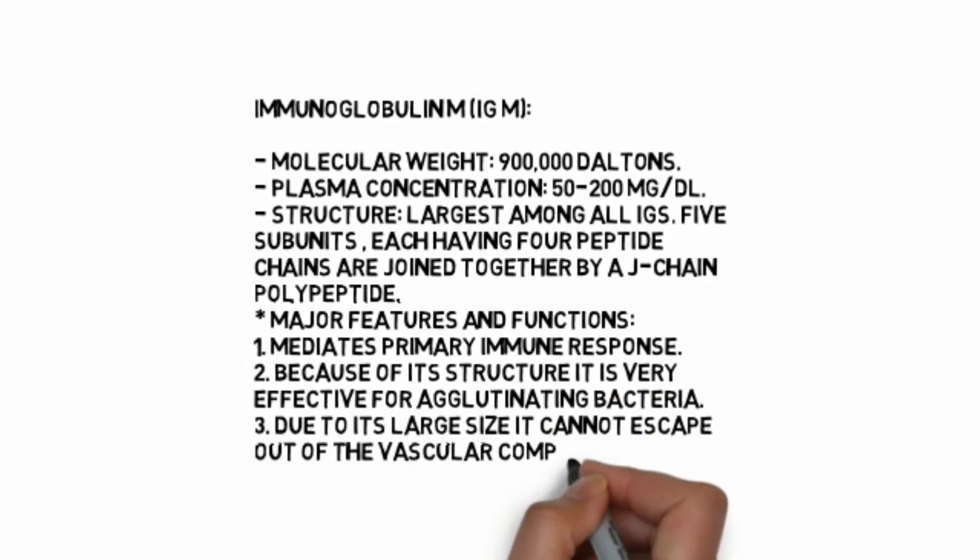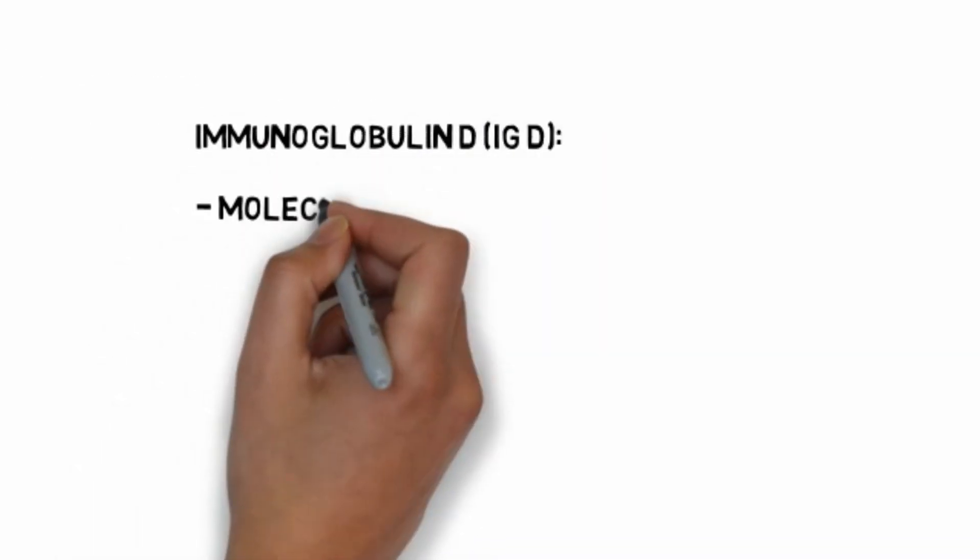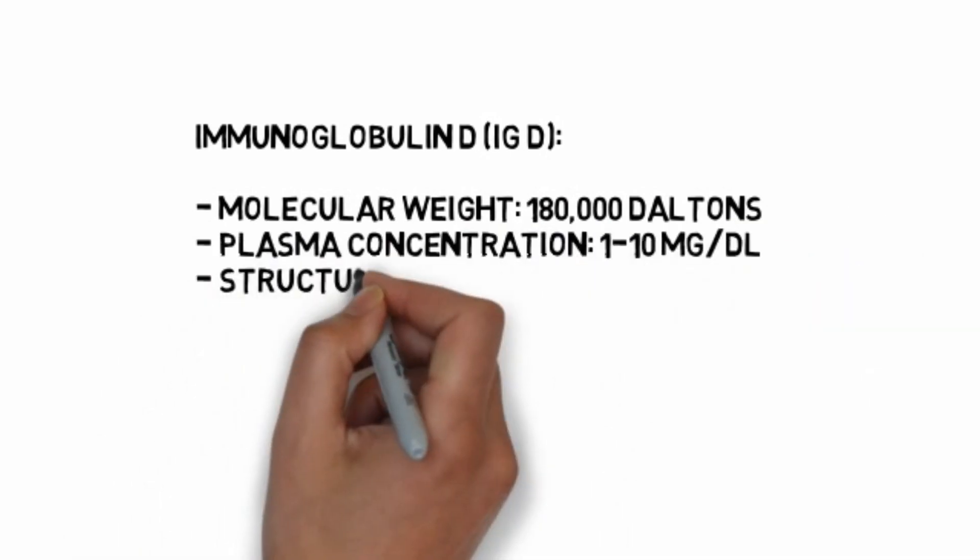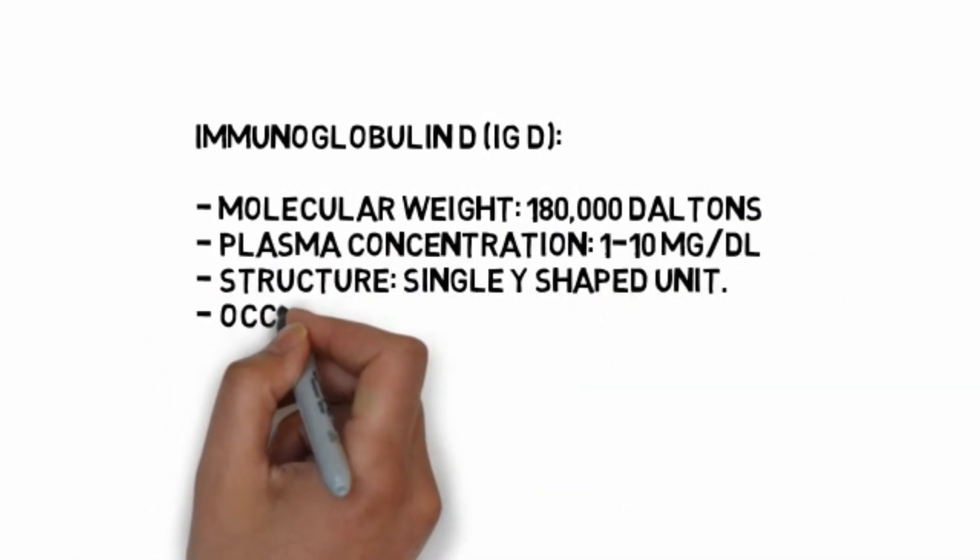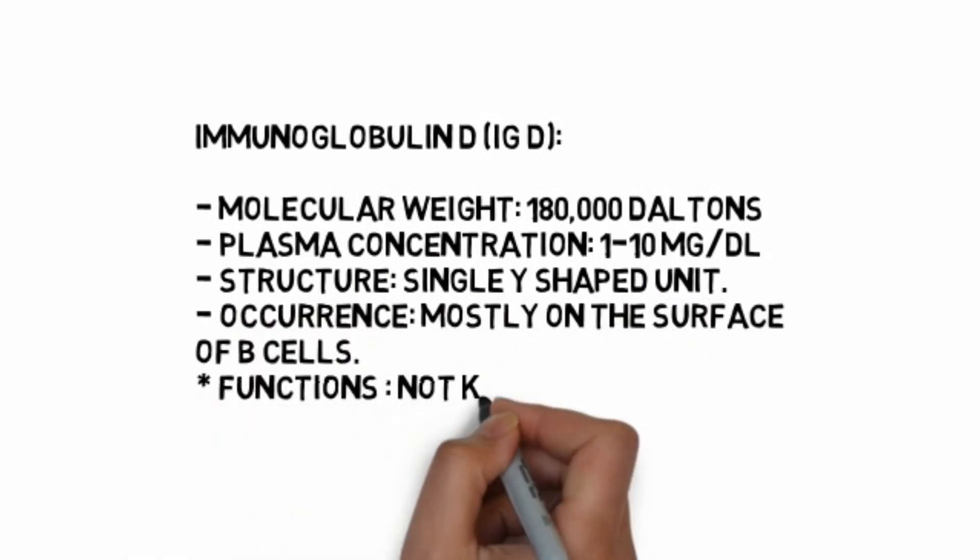Immunoglobulin IgD: molecular weight 180,000 daltons, plasma concentration 1 to 10 mg per deciliter. Structure: single Y-shaped unit. Occurrence: mostly on the surface of B cells. Functions not known but may act as B cell receptor.